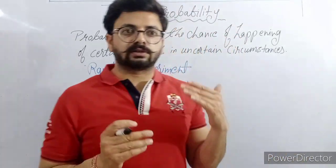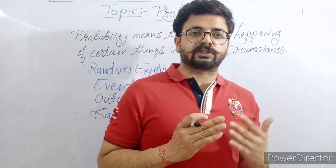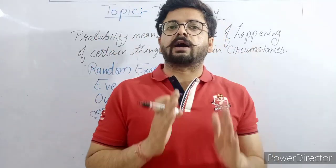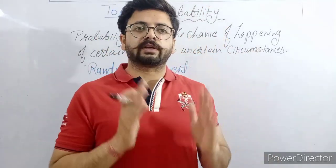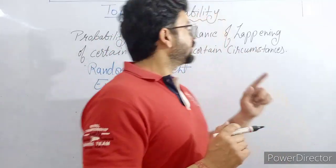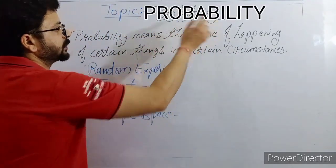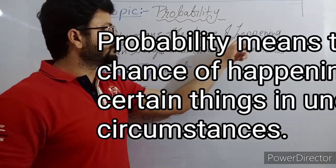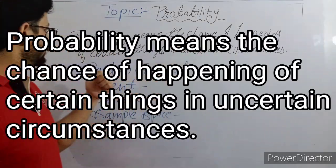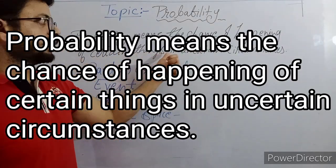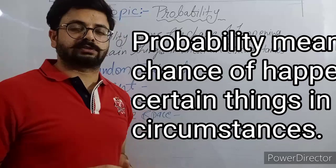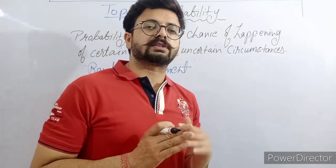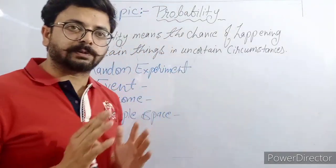Probability is completely based on data. Probability is the branch of mathematics in which we calculate approximation and prediction, but all things are based on data. Probability means the chance of happening of certain things in uncertain circumstances.